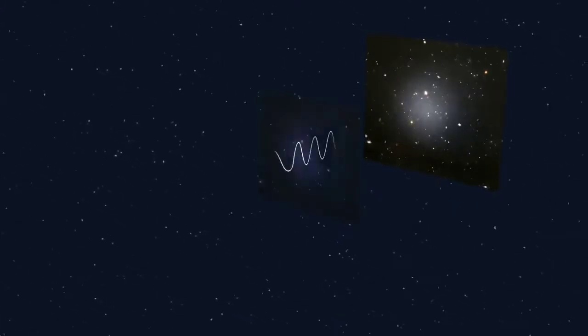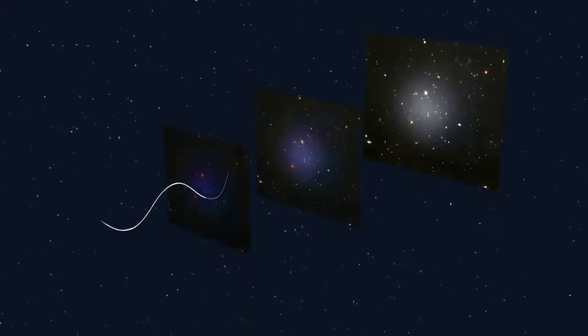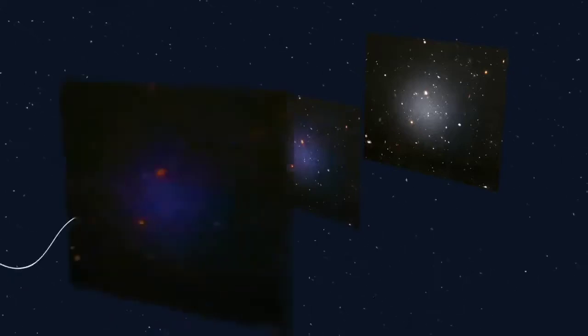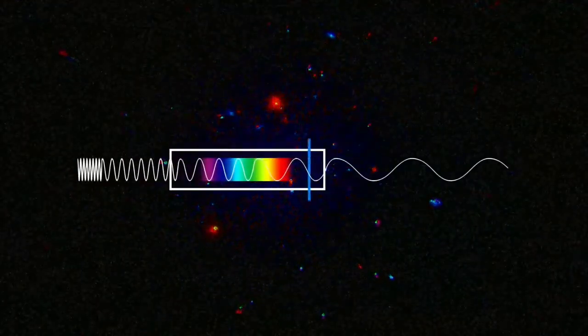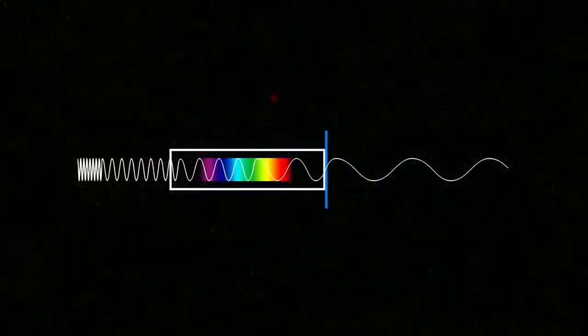As the distance to an object increases, the longer its light will spend traveling through space, and the more redshifted it will get. If the light is redshifted too much, it could be stretched to a wavelength outside of Hubble's viewing range.